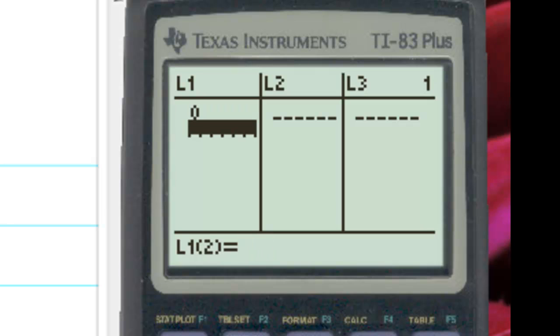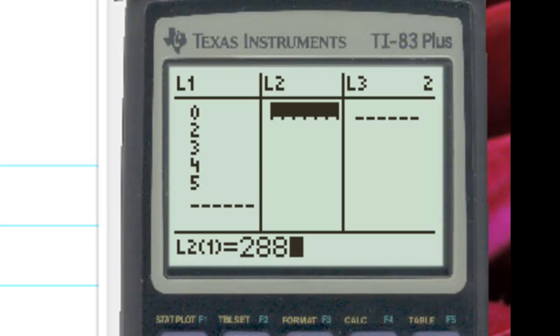So we have 0, 2, 3, 4, and 5. And our car prices. So the new price was $28,821. After 2 years, we had $17,643. And I'll continue down the list.